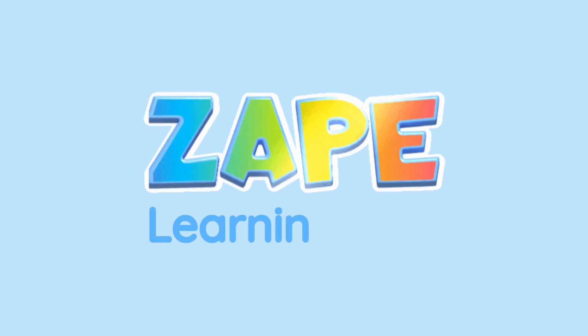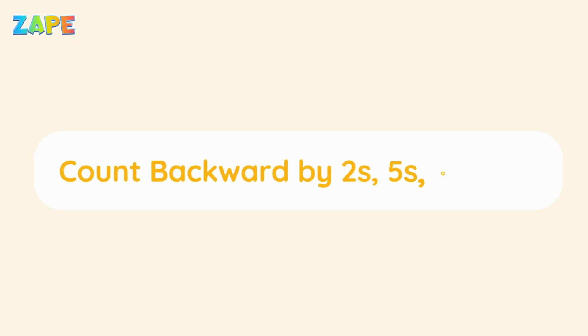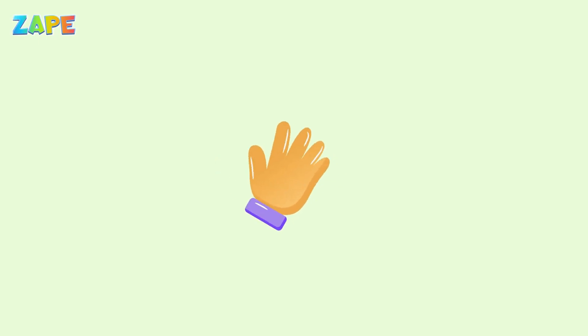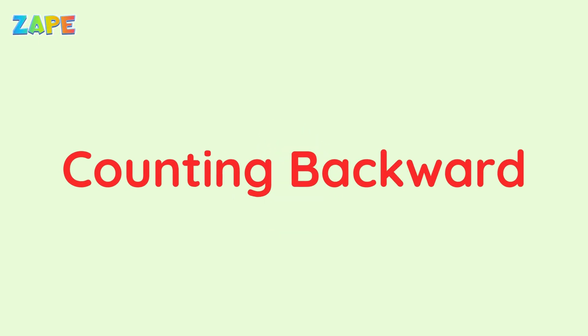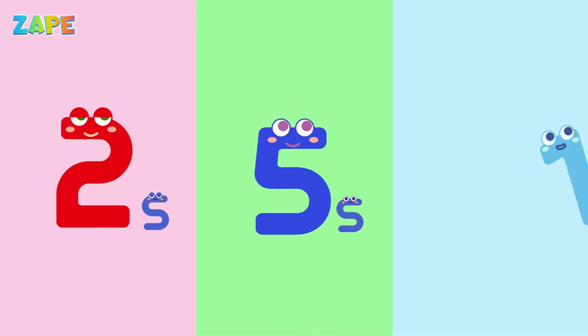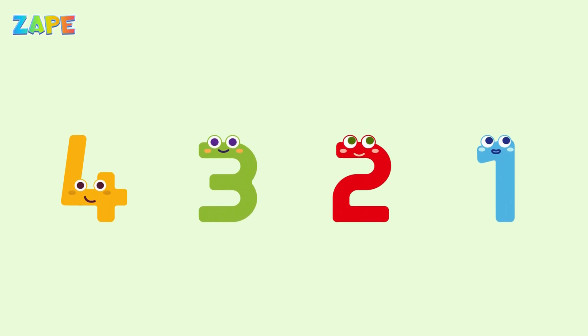Welcome to ZAPE Learning App. Hello little stars. Today we're going to learn something really fun. We will count backward by twos, fives, and tens. That means the numbers will go smaller each time. Let's begin.